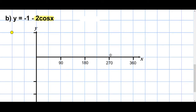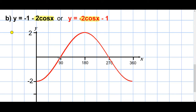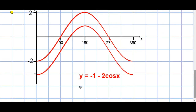Last one: y equals minus 1 minus 2 cos x. What I'd advise is to put the minus 1 at the end, rewriting it as minus 2 cos x minus 1 — that makes it a bit easier. So we've got a minus 2 cos x, which is a cosine wave going to 2 and minus 2, but it's a negative cosine, so it starts down and goes up. Plot your five main points and join them up for minus 2 cos x, then shift each of those five points down one position to get y equals minus 1 minus 2 cos x, giving values between minus 3 and 1.